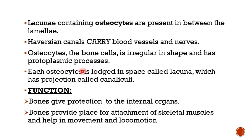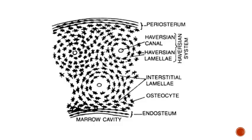Lacunae containing the osteocytes are spaces present between the lamellae. Haversian canals carry blood vessels and nerves. Osteocytes are irregular in shape and have protoplasmic processes; each osteocyte is lodged in a space called a lacuna, which has projections called canaliculi. The important function of bone is to give protection to internal organs like the lungs and heart, and provide attachment for skeletal muscles to help in movement and locomotion.